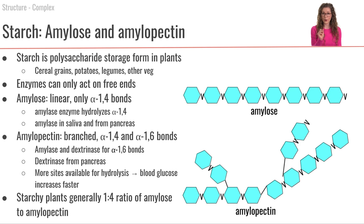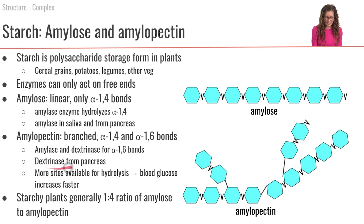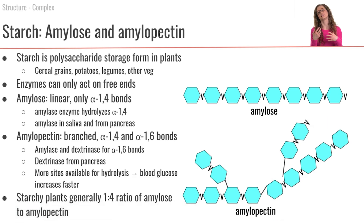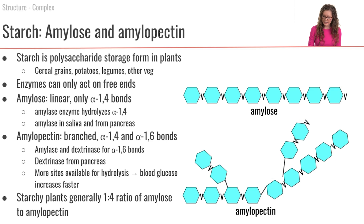Amylase can only hydrolyze the alpha-1,4 linkages; a different enzyme is needed for the alpha-1,6 linkages. That enzyme is called dextrinase, which comes from the pancreas. Therefore, amylopectin digestion cannot begin in the mouth but can occur in the small intestine. Because amylopectin is branched, it has more terminal ends, meaning enzymes can work at more sites simultaneously, so amylopectin is hydrolyzed faster, increasing blood glucose concentration more quickly.